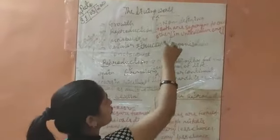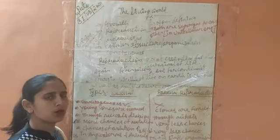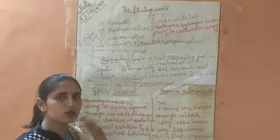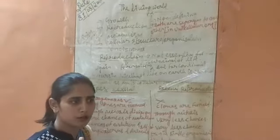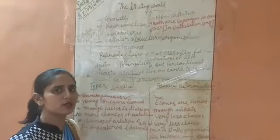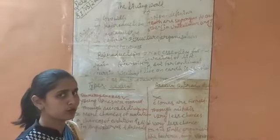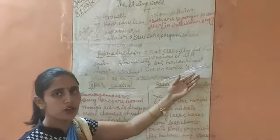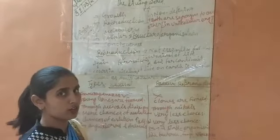Another point about growth and reproduction is that both are synonymous to each other, especially in unicellular organisms. If we talk about unicellular organisms like amoeba, bacteria, yeast, or fungi — when growth occurs in such unicellular organisms, reproduction also occurs, and that reproduction represents the growth of that particular individual.